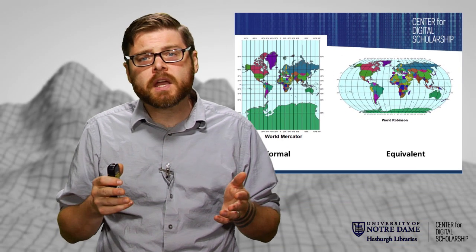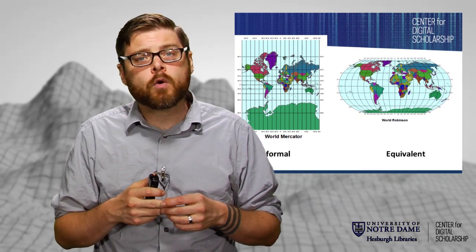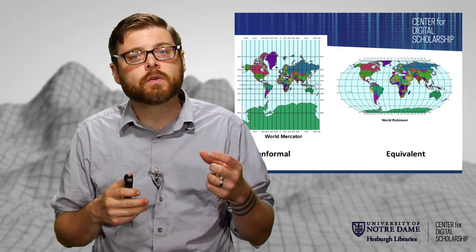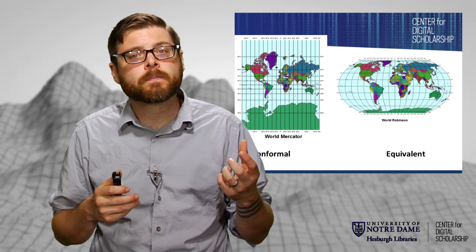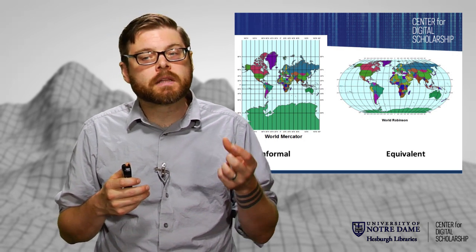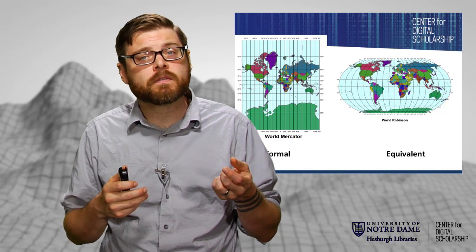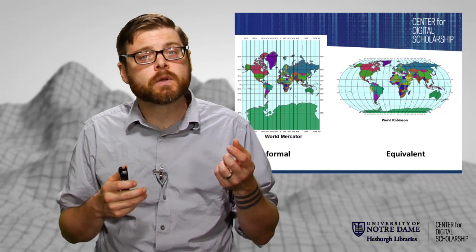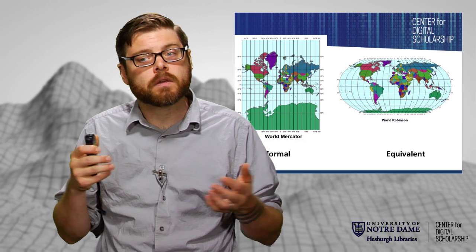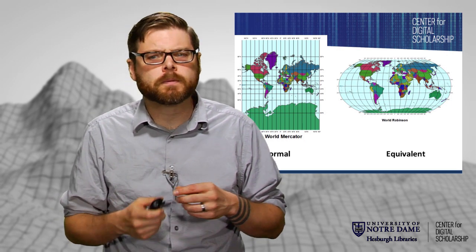This should be familiar to everyone if you've ever looked at a globe and compared Greenland on a globe versus on a map. Generally, Greenland is either going to be a different size or shape because it's very far away from the equator when you look at it on a paper map versus on a globe.